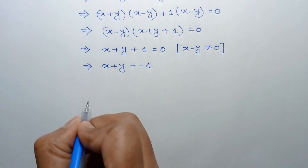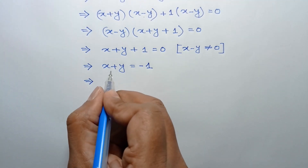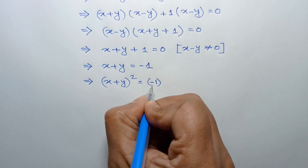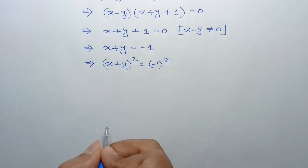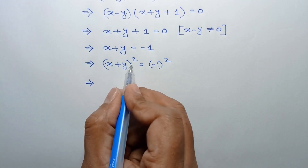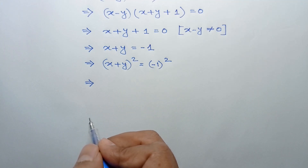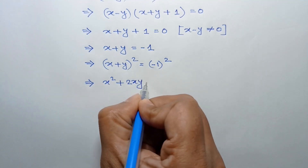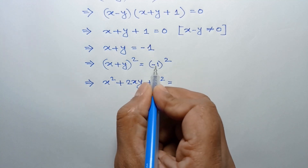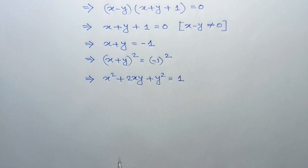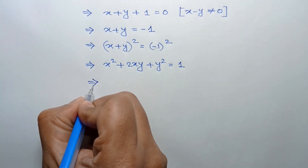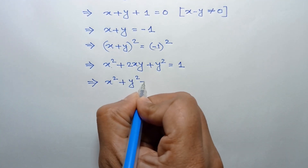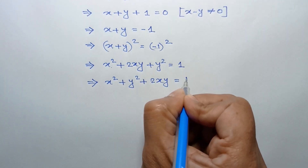Now squaring both sides, x plus y whole squared equals negative 1 whole squared. Applying the formula a plus b whole squared equals a squared plus 2ab plus b squared, we get x squared plus 2xy plus y squared equals 1. Rearranging, x squared plus y squared plus 2xy is equal to 1.